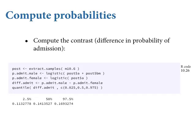To get the full contrast, extract posterior samples and put them directly into the logistic function. You extract samples of alpha and BM, plug them into logistic of alpha + BM times 1 for male versus logistic of alpha alone for female. Then compute the contrast by subtracting one from the other — that gives you the posterior distribution of the predicted difference in probability of admission between a male and female application.